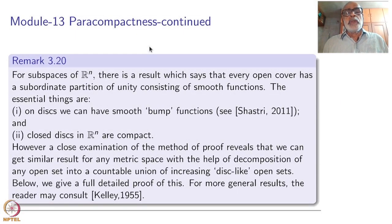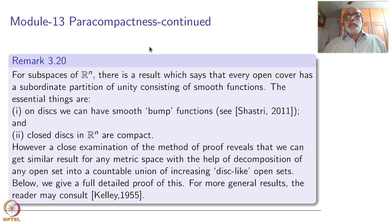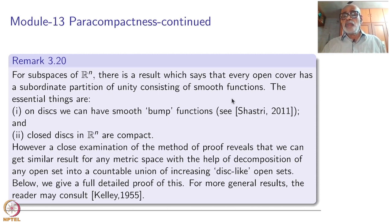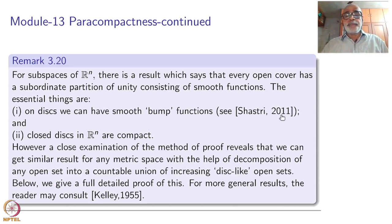Welcome to the NPTEL NOC course on Point Set Topology, part 2, module 13. We continue our study of paracompactness. For subspaces of Rn, there is a result which says that every open cover has a subordinate partition of unity consisting of smooth functions. The word smooth will not have meaning when studying arbitrary topological spaces, but inside Rn such a thing is possible.